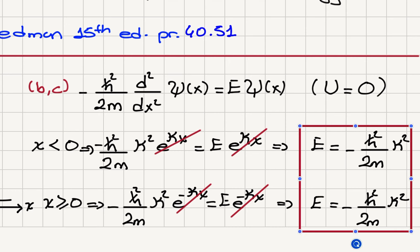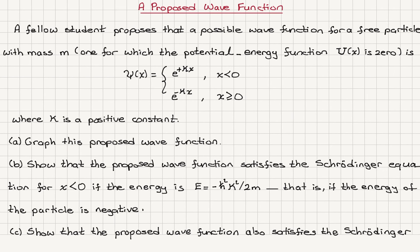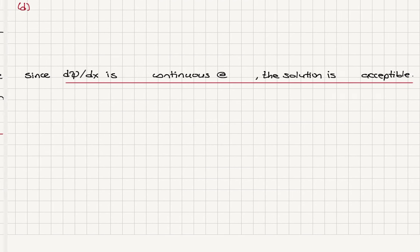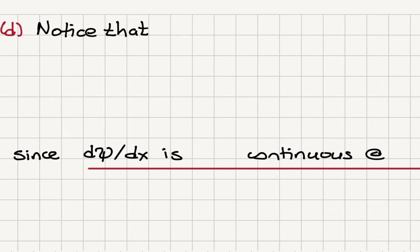So it indeed satisfies Schrödinger's equation if the energy is given by minus h-bar squared kappa squared over 2m. Part D says this is not an acceptable wave function even though it satisfies the Schrödinger equation. To see why, we look at what is happening at x equals zero plus — specifically, the derivative of the wave function d psi/dx.